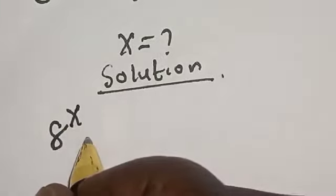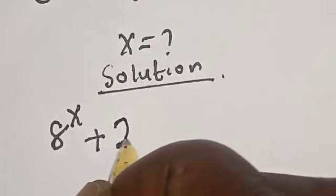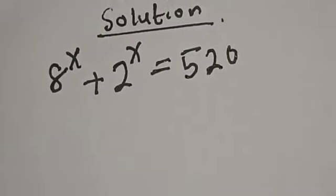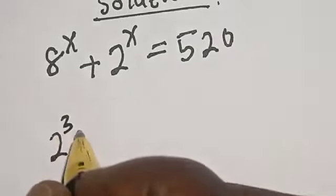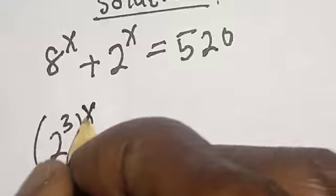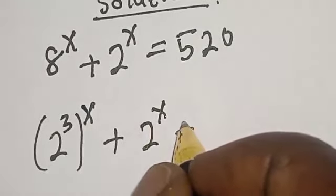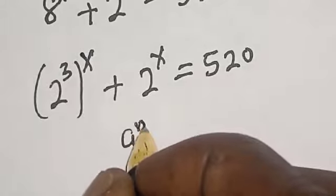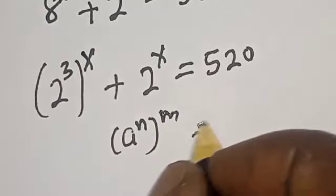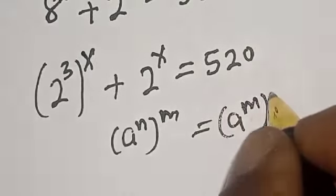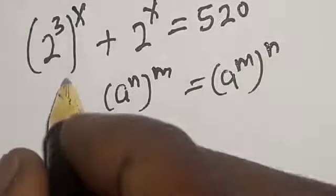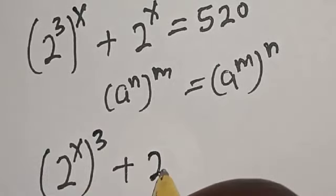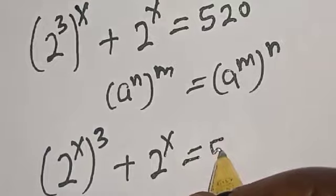8 raised to power x plus 2 raised to power x is equal to 520. This is the same thing as 2 raised to power 3, raised to power x, plus 2 raised to power x is equal to 520. Note this rule: a raised to power n, raised to power m, is equal to a raised to power m raised to power n. So this becomes 2 raised to power x raised to power 3, plus 2 raised to power x, is equal to 520.